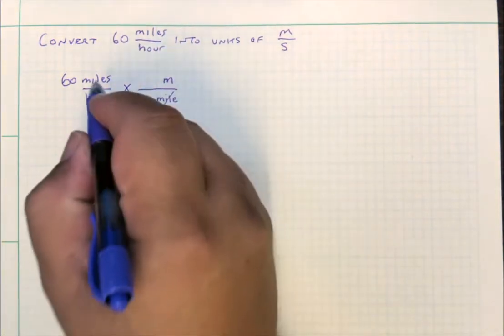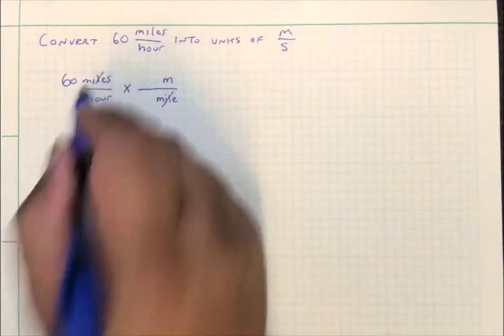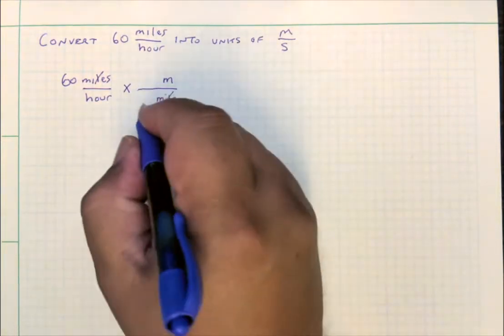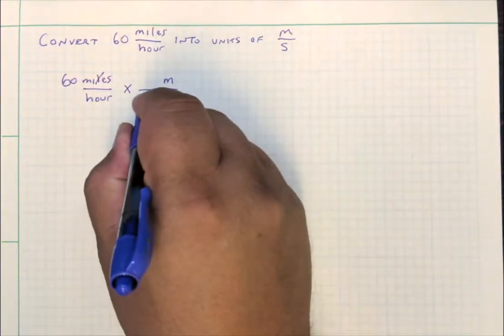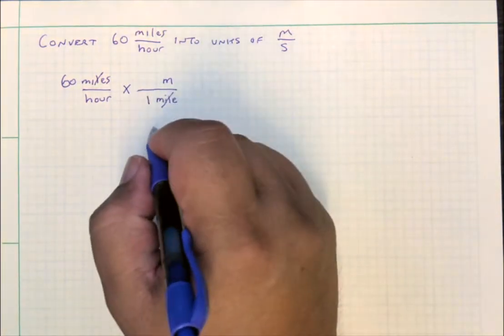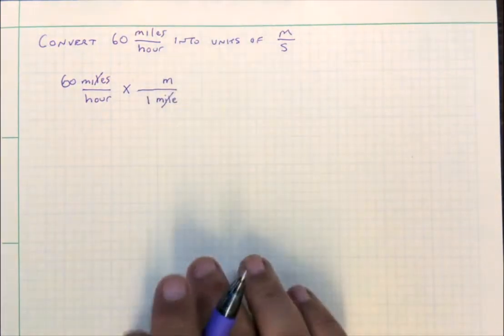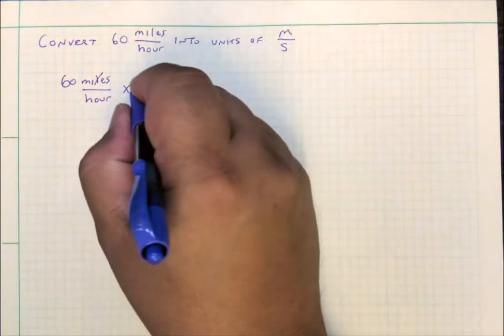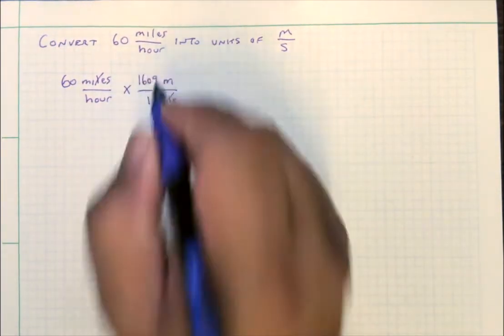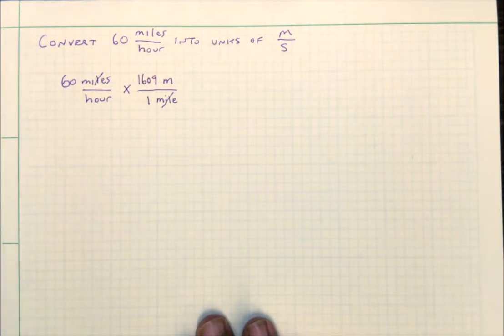This way, you can see, we can cancel out miles and leave behind meters. Now the mile is the larger unit, so we put a one beside that. We look up how many meters are in a mile, and that number turns out to be approximately 1,609 meters in one mile.